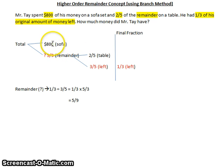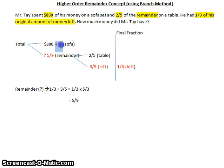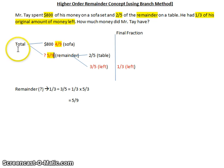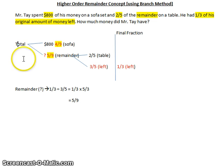If the remainder is five out of nine, then the fraction spent on the sofa must be four out of nine, because these two fractions must add up to one whole. And of course the total will simply be nine out of nine.